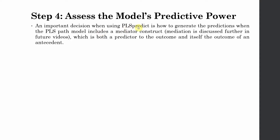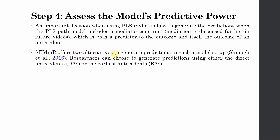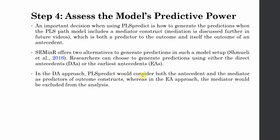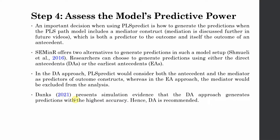An important decision when using PLS-Predict is how to generate predictions when the PLS path model includes a mediator construct, since a mediator is both an outcome and a predictor. seminR offers two alternatives: the direct antecedents (DA) approach and the earliest antecedents (EA) approach. In the DA approach, PLS-Predict considers both the antecedent and the mediator as predictors of the outcome construct. In the EA approach, the mediator is excluded. Simulation evidence shows the DA approach generates predictions with highest accuracy, so we use the DA approach.